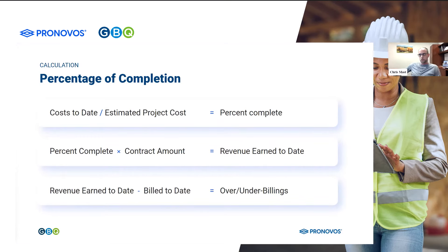So how do you actually calculate that percentage of completion? If we're not going to base revenues on billings, how are we going to determine it? Again, 90% of the time, contractors are going to use something called the cost-to-cost method.